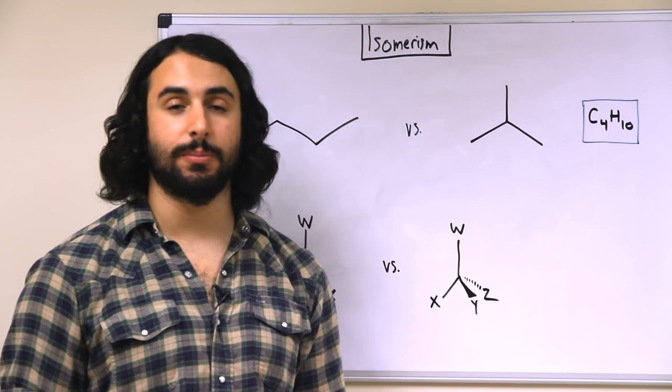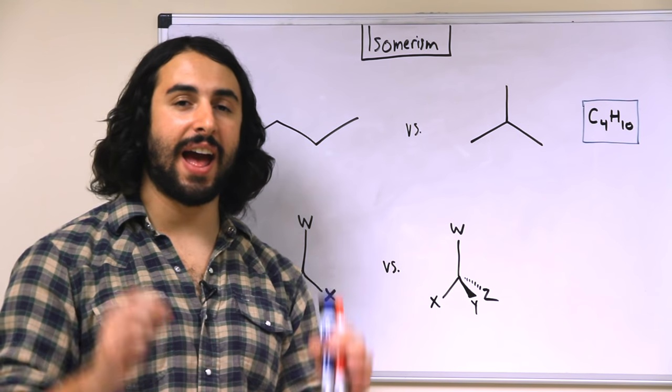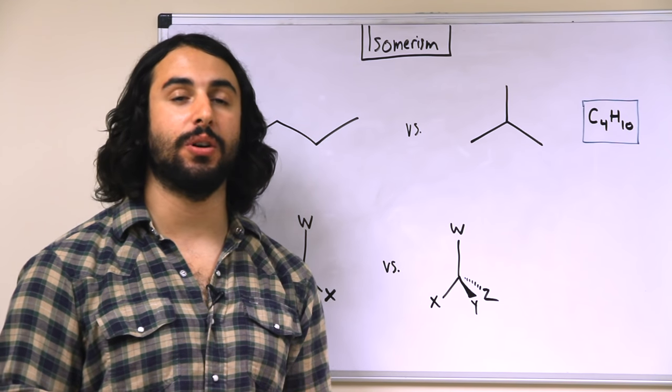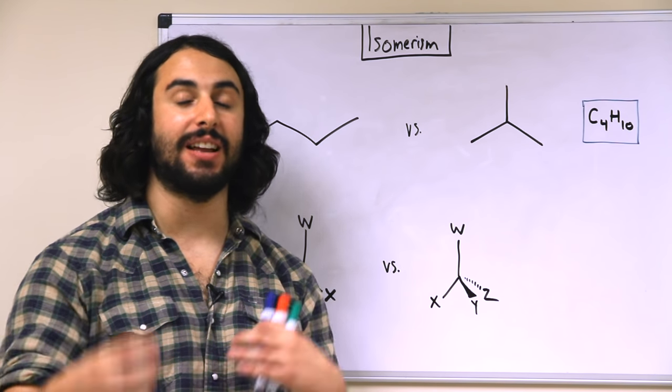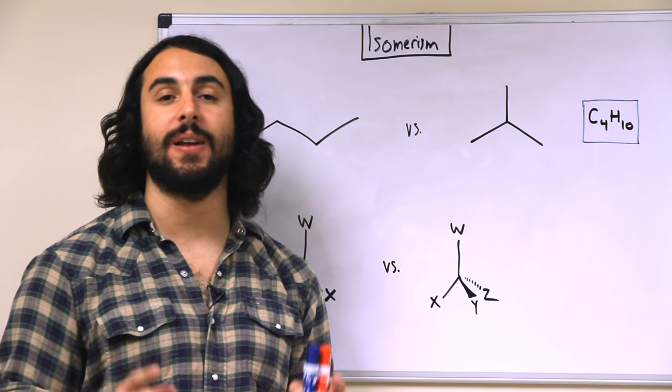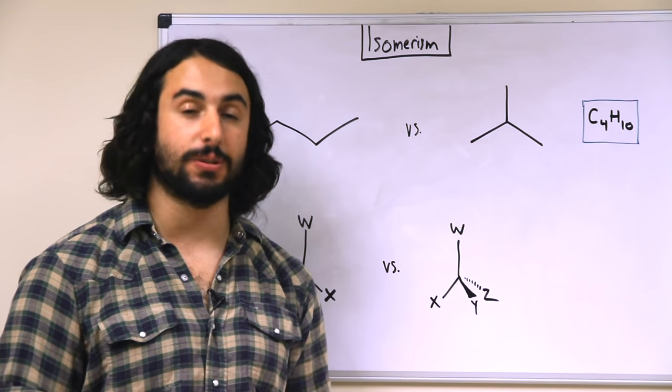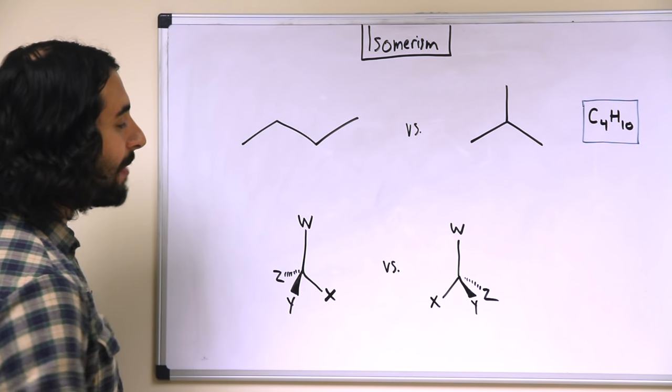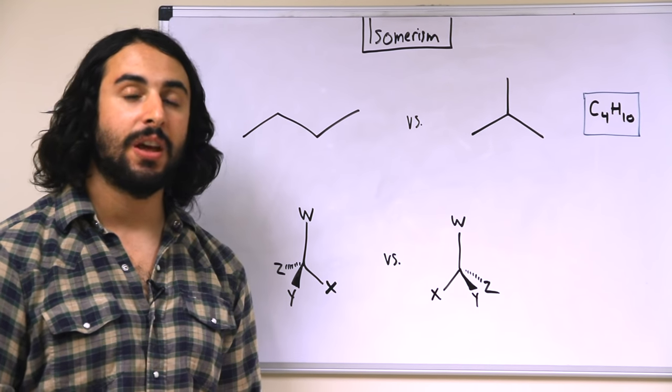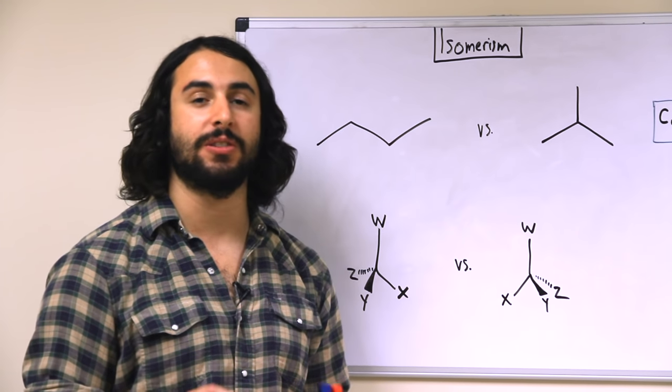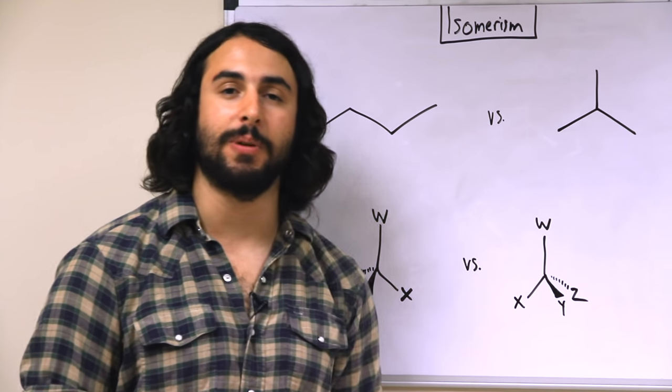Now, stereoisomers are compounds that have the same molecular formula and the same connectivity. In other words, the same atoms connected in the same way. However, they differ in the way they are oriented in three-dimensional space. So something like this, we can see that it is the same atoms bound in the same manner. However, they differ in the way that they are oriented in three-dimensional space. And let's talk a little bit about why.